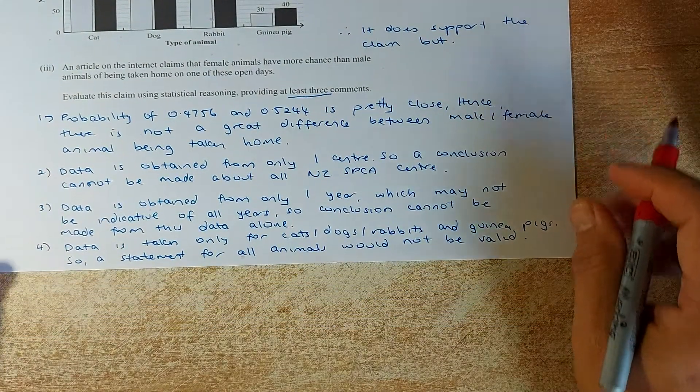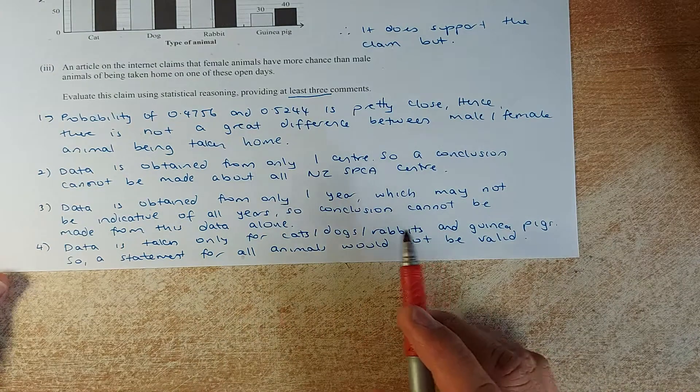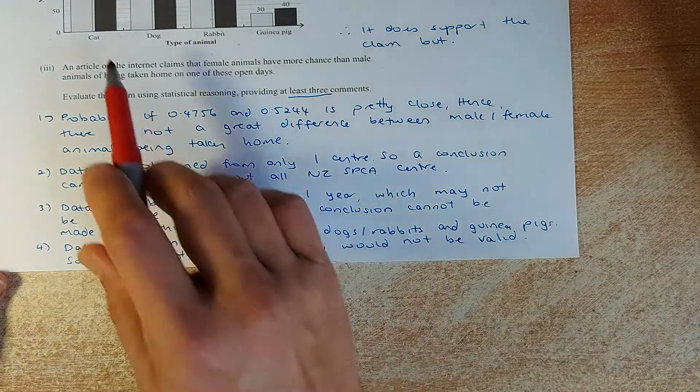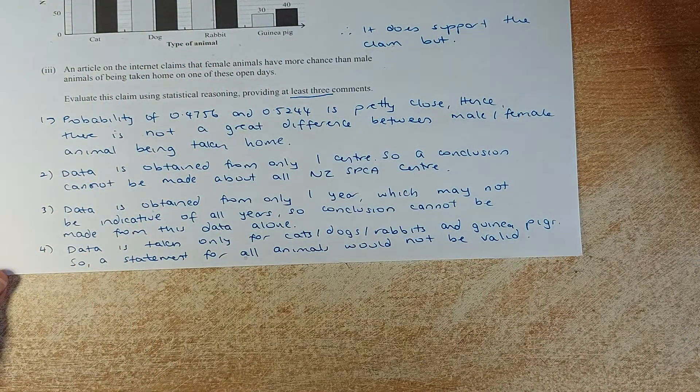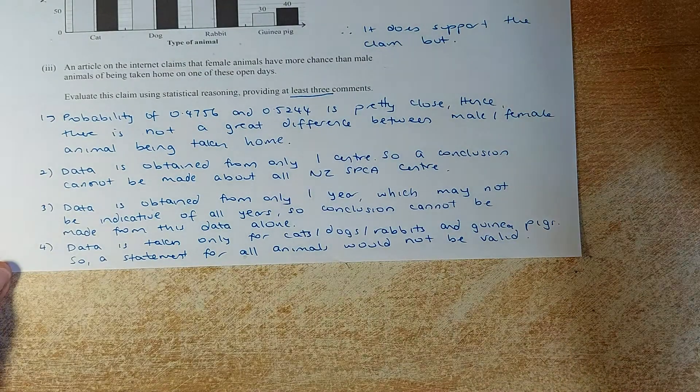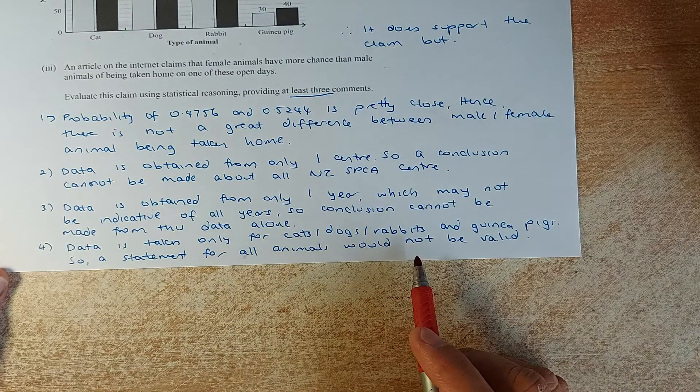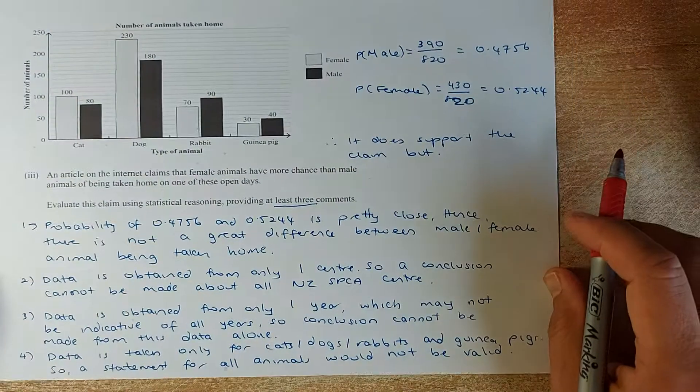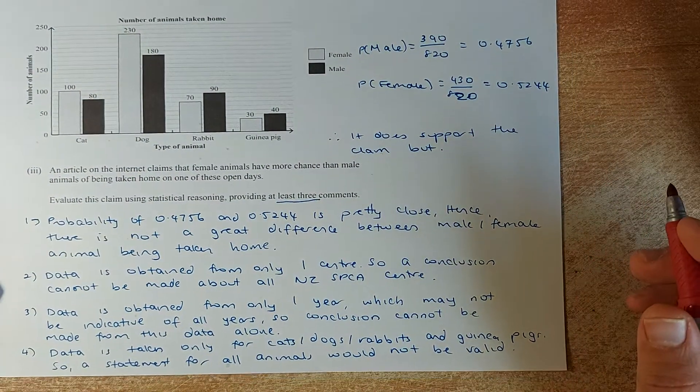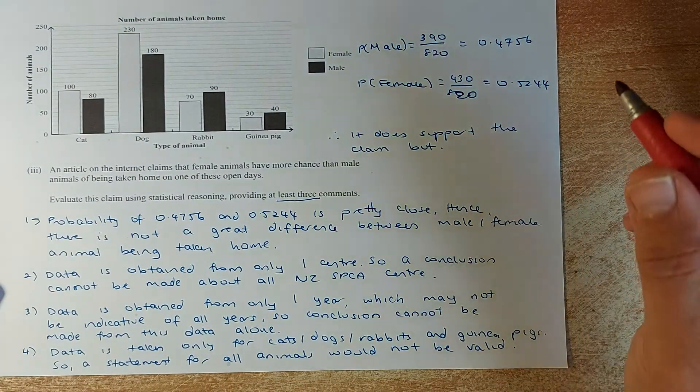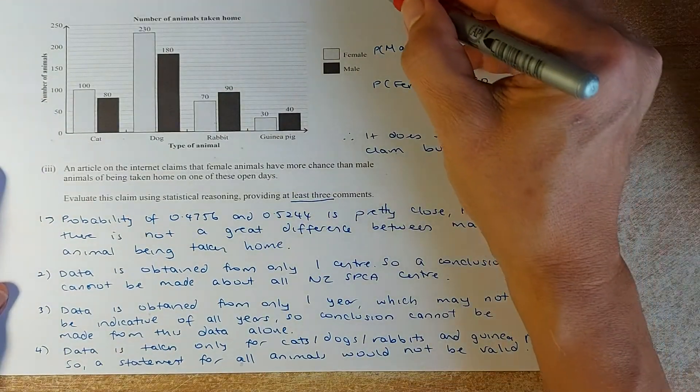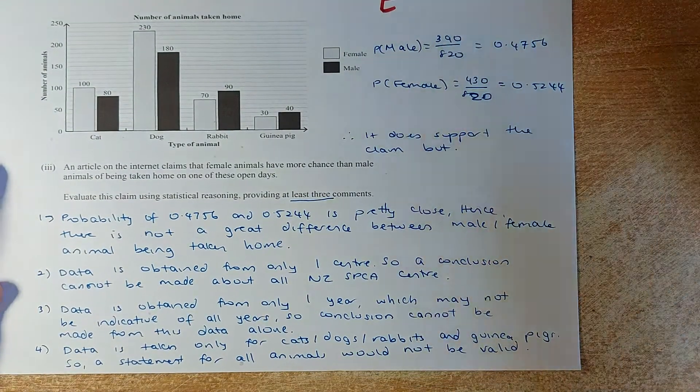Last but not least, I've given you the last claim: data is only for certain animals - the cat, the dog, the rabbit and guinea pig. It doesn't include other animals. So a statement for all animals again would not be valid. If you can answer three or four of the valid points in this external, you will get an excellent for this question.